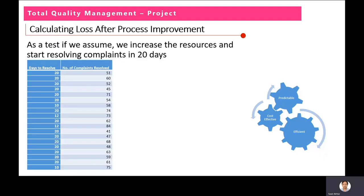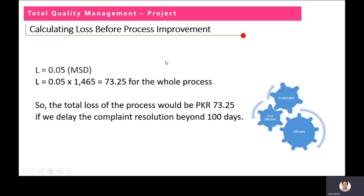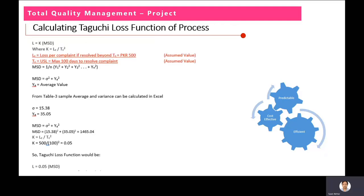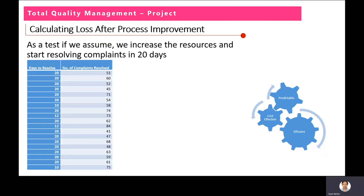This is the assumed improvement table. We assumed that by increasing resources, we can start resolving complaints within 20 days. In the same table, wherever the number of days exceeded 20, we reduced it to 20 as an assumption — just to check how much loss we can reduce. Wherever the value was already lower than 20, we kept the same value: 10, 12, and so on.